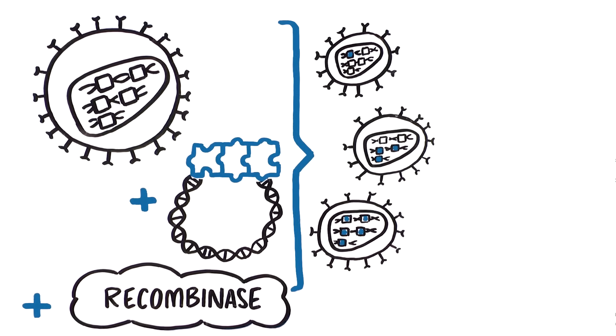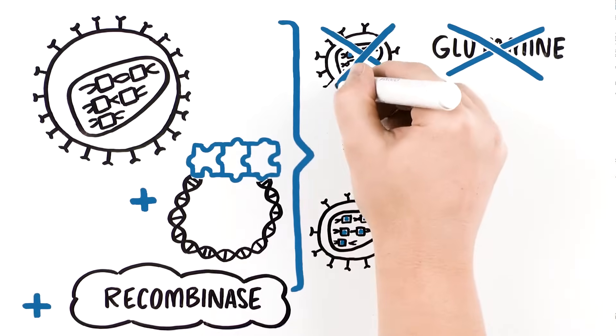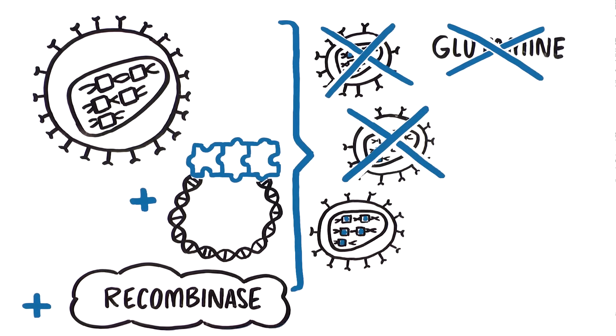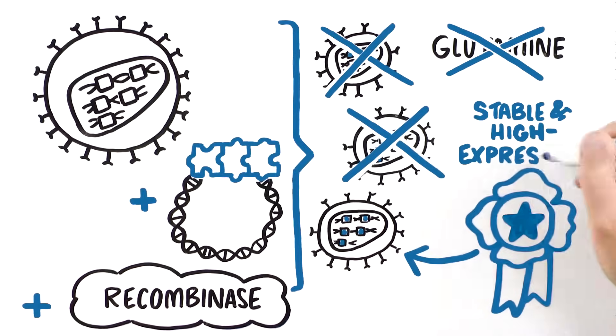Once the transgenes are inserted, glutamine is removed from the cell culture media for selection, enabling high-expressing cells to out-compete other cells, resulting in a stable and high-expressing pooled cell line.